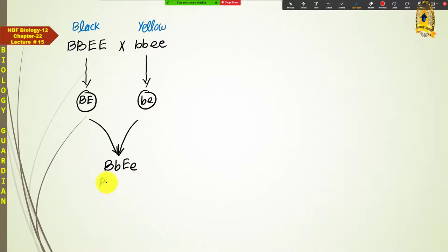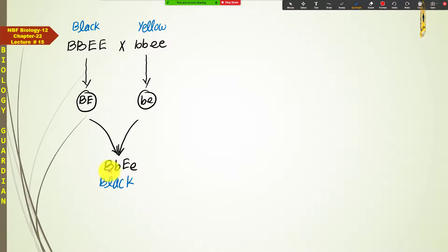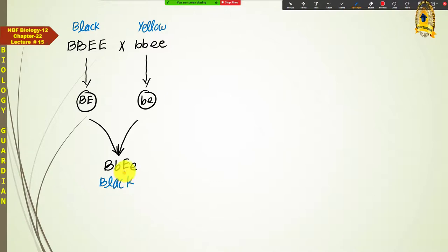تمام F1 offspring black ہوں گے۔ کیونکہ capital B small b پر dominant ہے اور capital E موجود ہے جو yellow color کو inhibit کرتا ہے، اس لیے locus one کے genes normally express ہوں گے اور black coat color develop ہوگا۔ Parents میں ایک black اور ایک yellow تھا لیکن تمام offspring black ہیں۔